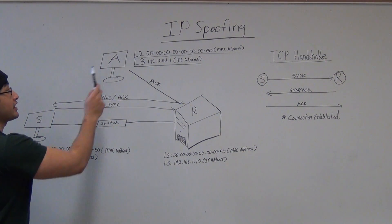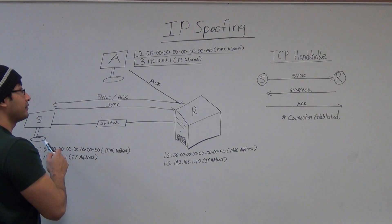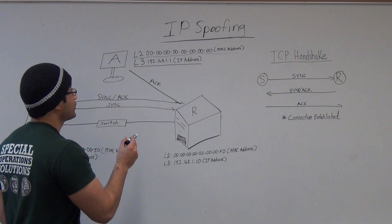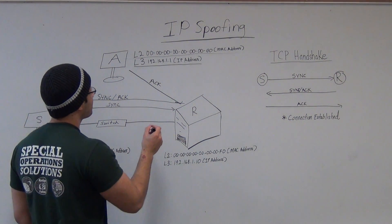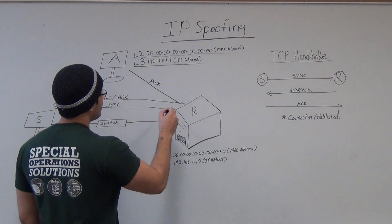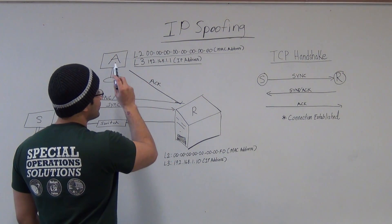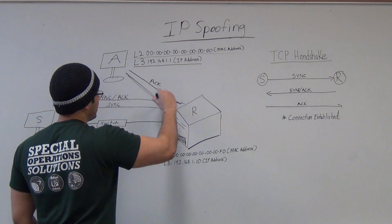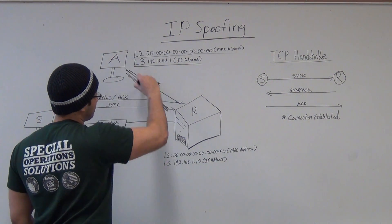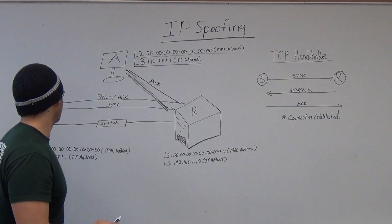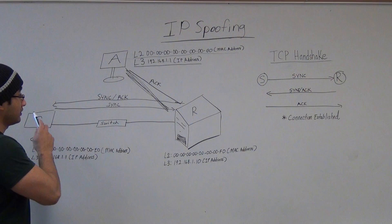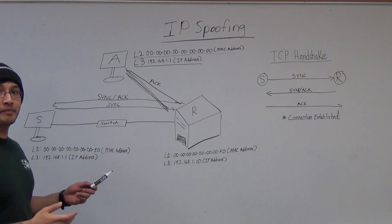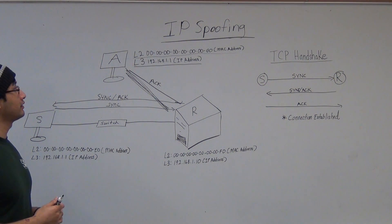The attacker has spoofed it — he's pretending to be the sender. So communication between the attacker and the receiver will be ongoing, while the sender will not know. And that's how IP spoofing works.